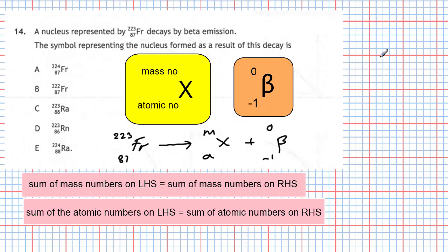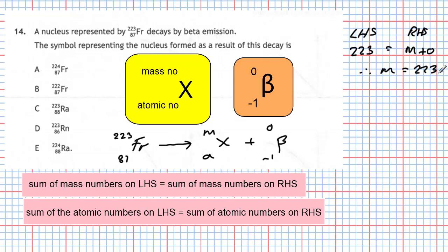Looking at the mass numbers: on the left-hand side we have 223, and that must equal m plus zero on the right-hand side. Therefore, m is equal to 223 — the mass number doesn't change.